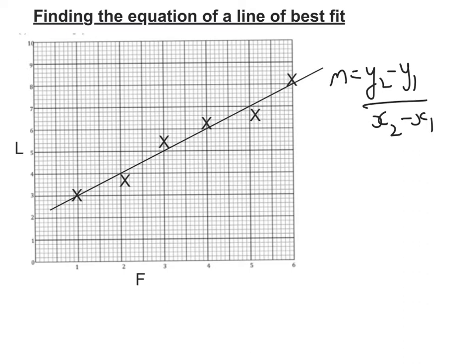So we need to find two points of this line. Now, it does not have to be one of the points, the data points, on this scatter graph. It's much better to pick points that make whole numbers.